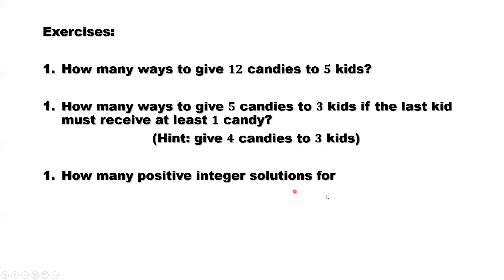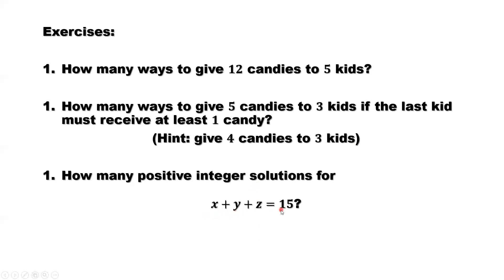How many positive integer solutions are there for the next equation? Here we modify the question — original asked for non-negative, now we want positive, meaning X, Y, Z cannot be zero. Similarly to the previous question, we save one candy for the first kid, one for the second, and one for the last. So 15 minus three is 12, and the question becomes: how many ways to give 12 candies to three kids? That's the way to solve this question.